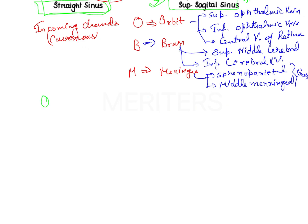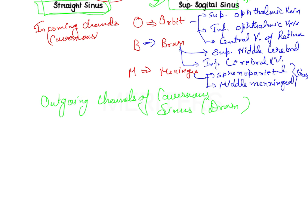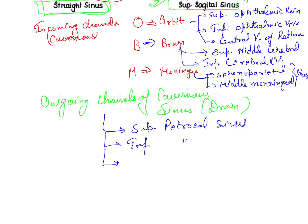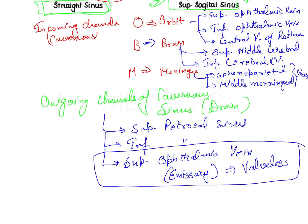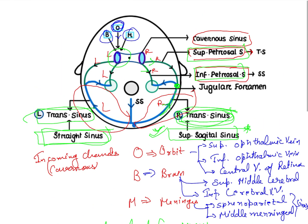Now the outgoing channels of the cavernous sinus — that is, where it drains to. We have the superior petrosal sinus, the inferior petrosal sinus, the superior ophthalmic vein, and the emissary vein. The emissary vein is a valveless vein and is responsible for infections traveling to the brain, causing cerebral infection. This is a very important point — this question was actually asked in my army dental corps exam.